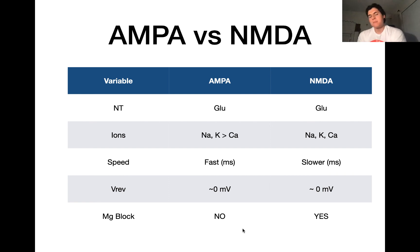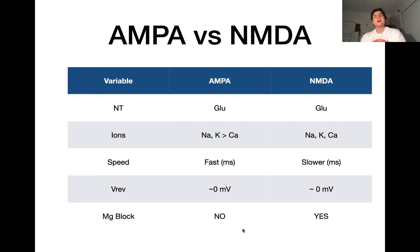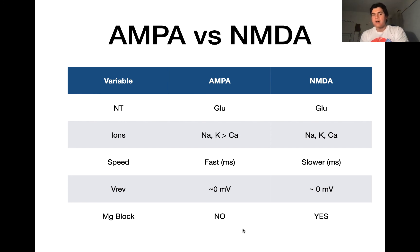I hope this helped you understand the differences between these two receptors. This concludes our video series on glutamate and its effects. In our next video, we're going to focus on a different type of neurotransmitter — an inhibitory neurotransmitter — and that neurotransmitter is going to be GABA. Good luck on your studies, and I hope to see you next time.